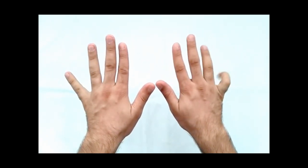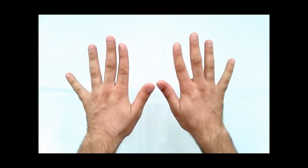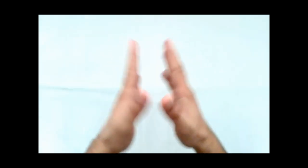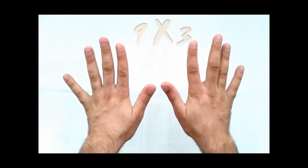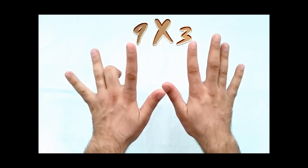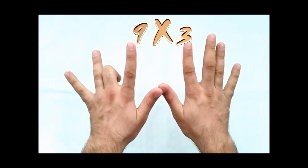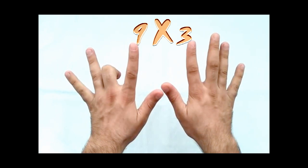Now you are ready for the nine times multiplication table. Let's say the question is nine times three. Count to the third finger - one, two, three - and bring it down. So there will be fingers on the left side and right side.